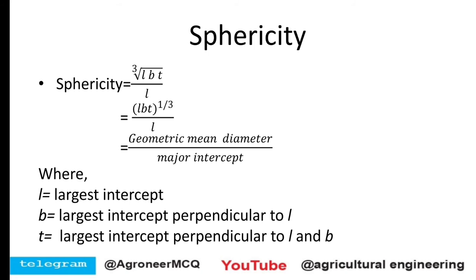Another formula is: sphericity equals cube root of (l × b × t) divided by l, which equals geometric mean diameter divided by major intercept. Here, l is the largest intercept, b is the largest intercept perpendicular to l, and t is the largest intercept perpendicular to both l and b. For rice, l is the length, b is the width, and t is the thickness, measured using a vernier caliper.